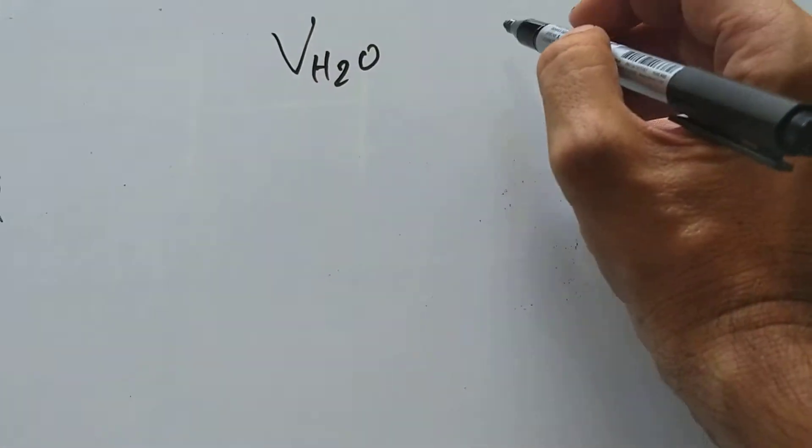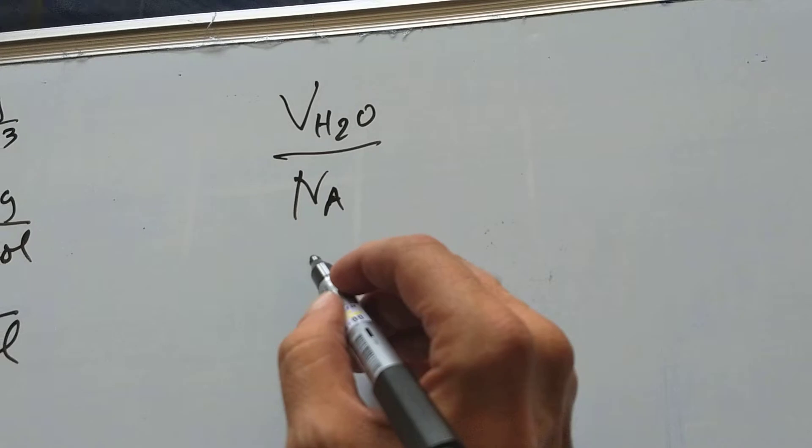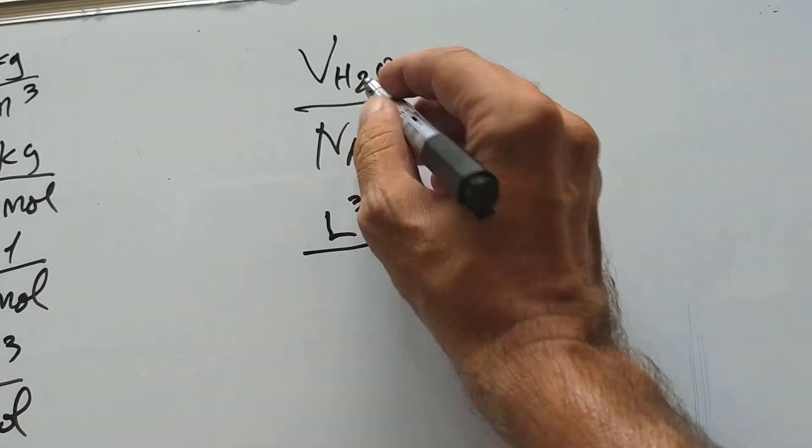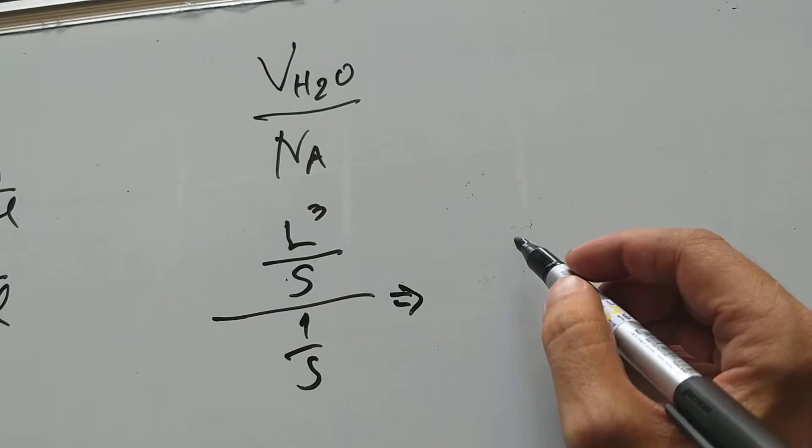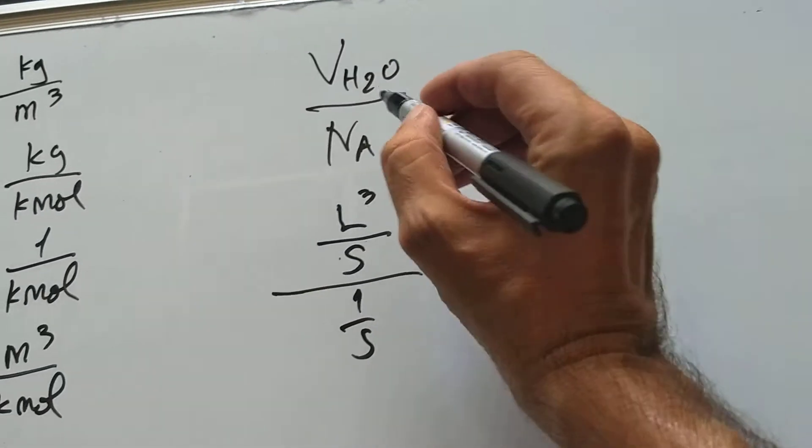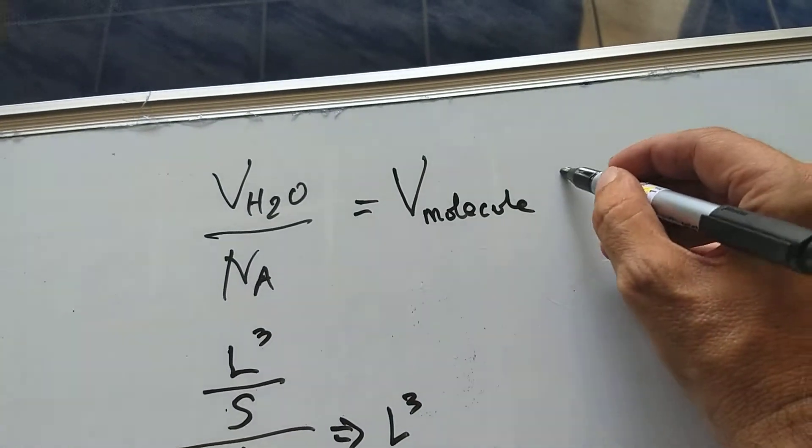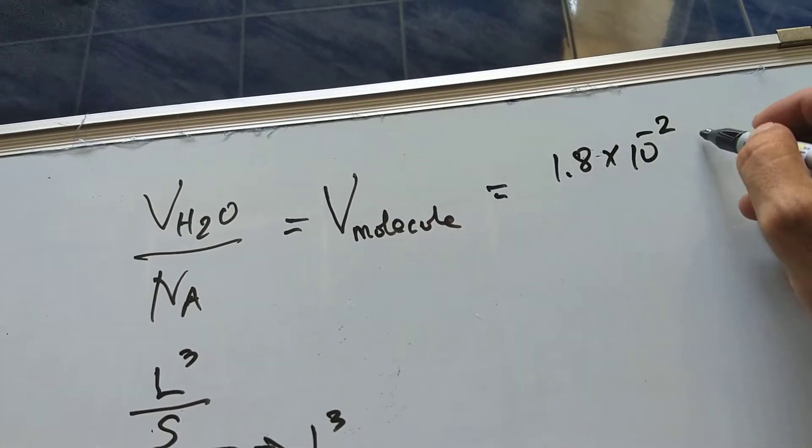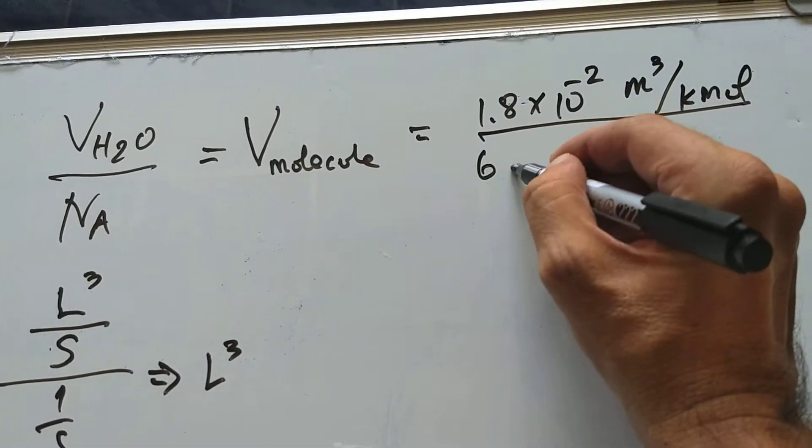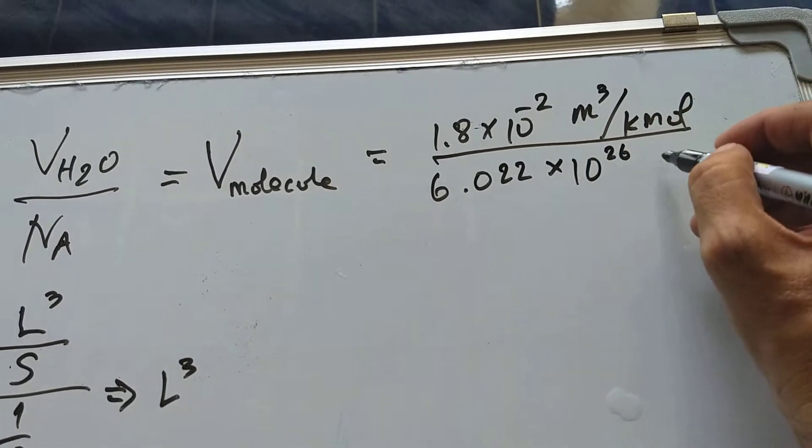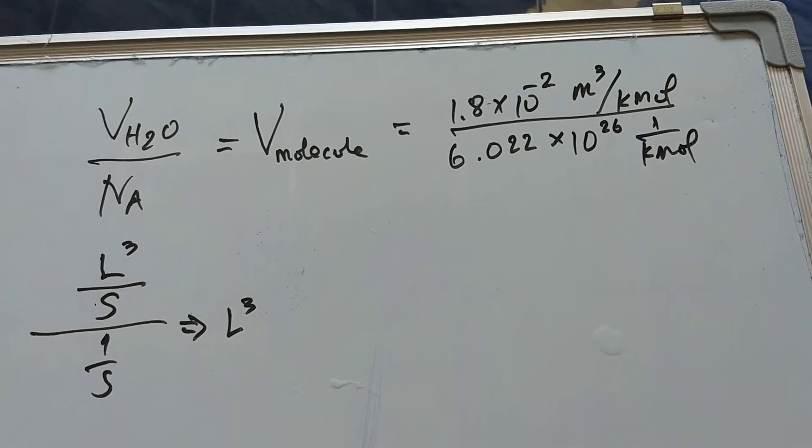Let's do VH2O divided by Na. Let's calculate the dimensions of this first. This is volume per substance, and this is 1 over substance. If I work out the dimensions of all of this, I get volume, and this is going to be the volume of one of my molecules, an H2O molecule. It's 1.8 times 10 to the minus 2 meters cubed per kilomole divided by Avogadro's number, 6.022 times 10 to the 26, 1 over kilomole. We're almost there.